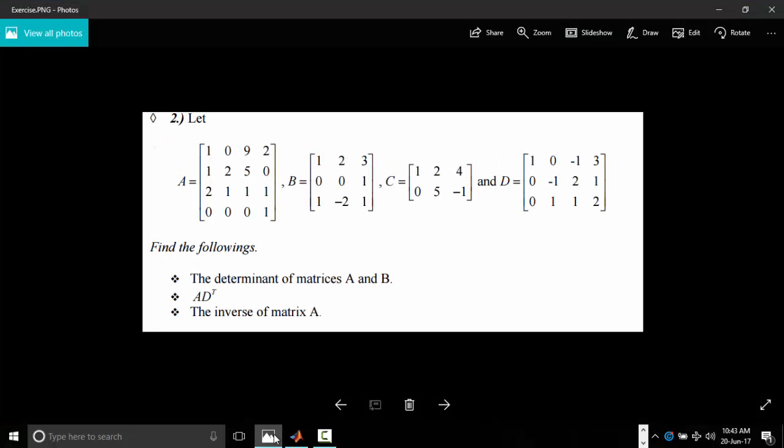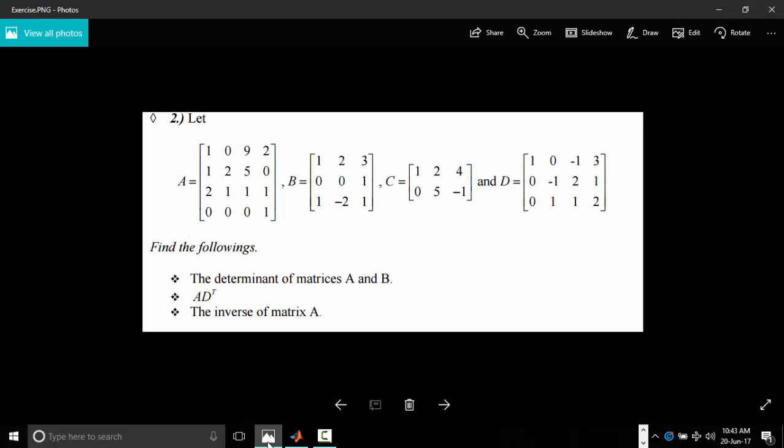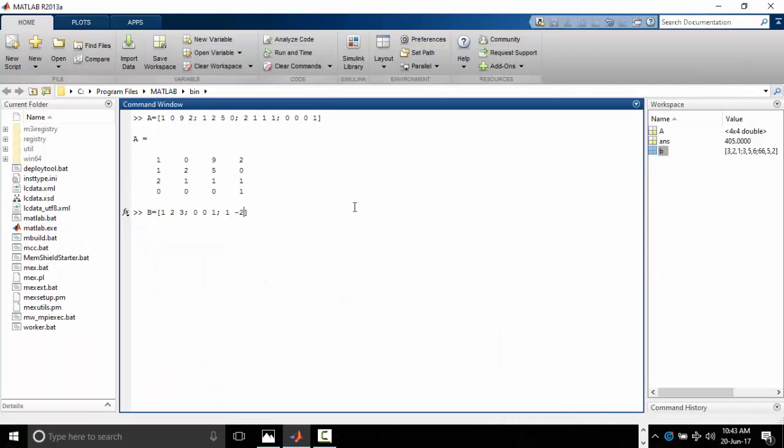The next thing is to declare b. Here's our b. We have b 1, 2, 3, 0, 0, 1, 1 minus 2, 1 minus 2, 1 minus 2, and 1. Enter.